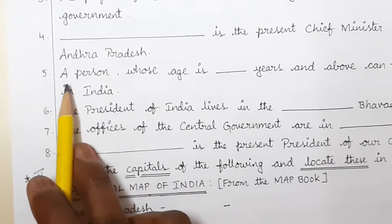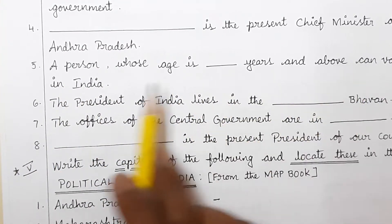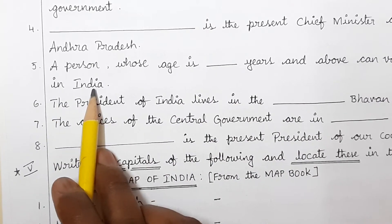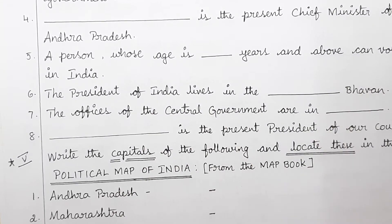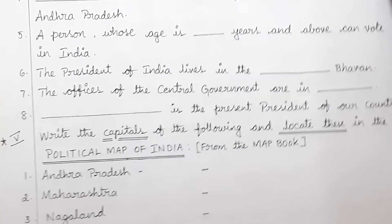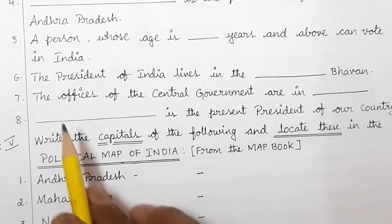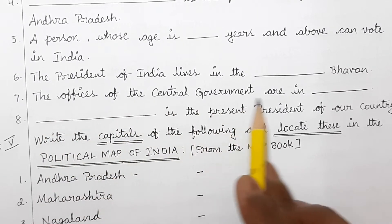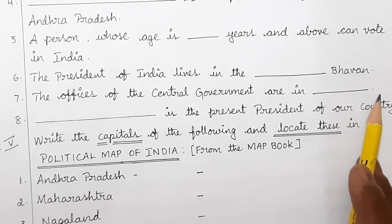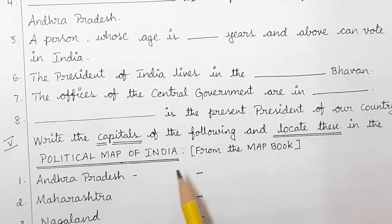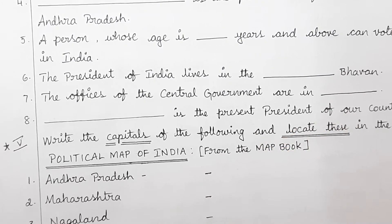A person whose age is dash years and above can vote in India — how many years? The President of India lives in the dash Bhavan — which Bhavan? Everything is given in the textbook, go through it. The offices of the central government are in dash. Dash is the present President of our country — who is the present President?